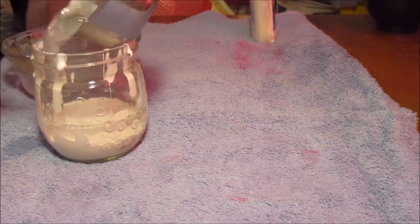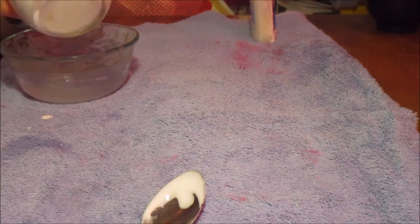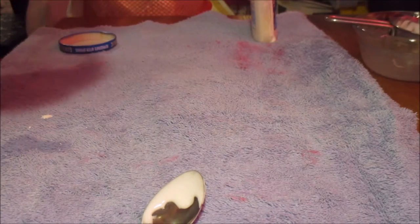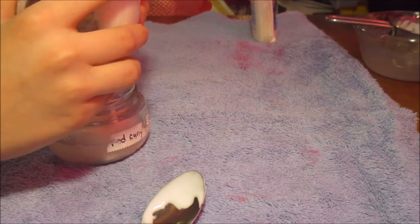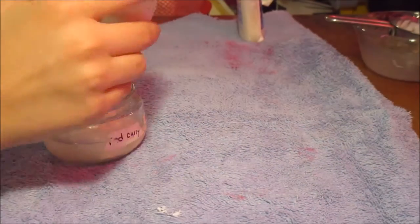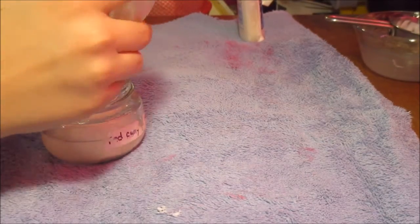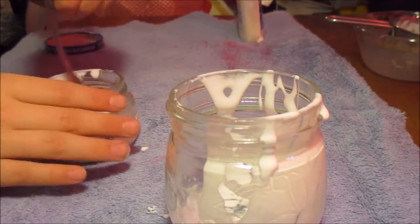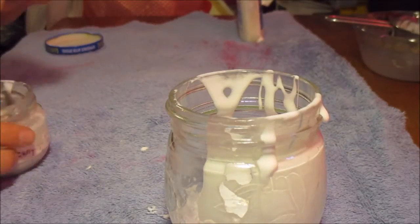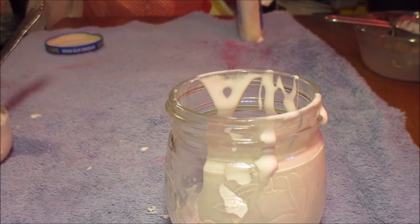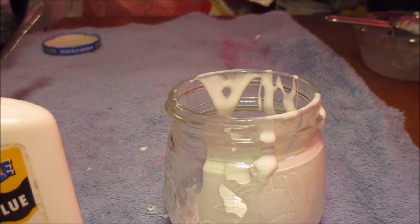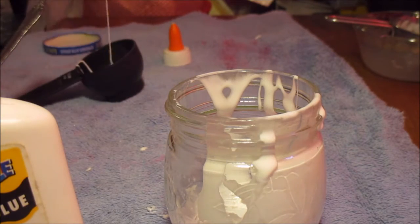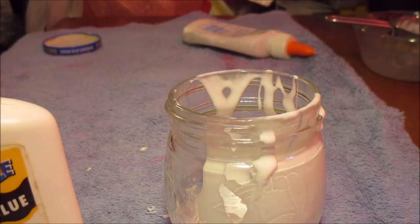Sorry if my voice doesn't sound too good, it's because I'm actually sick at the date that I am recording this, or have some sort of allergies. Anyway, back to the point. After you put the glue in the container, then you're going to need to put half that amount of water in. So if you put a whole cup of glue in, you're going to need to put a half cup of water in. If you put a half cup of glue in, you're going to need to put a quarter cup of water in.